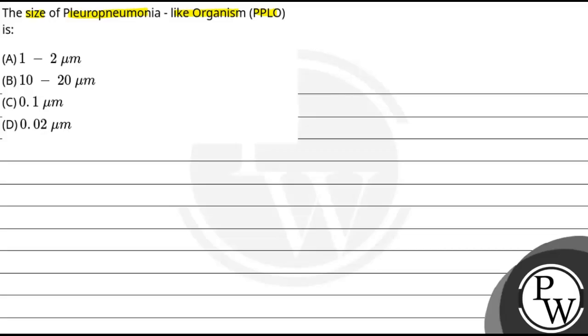A is 1 to 2 micrometer. B is 10 to 20 micrometer. C is 0.1 micrometer. D is 0.02 micrometer.